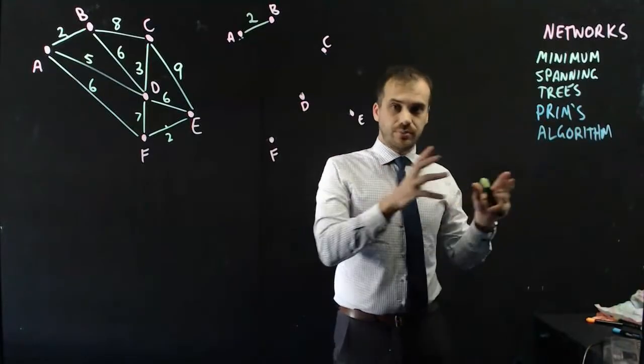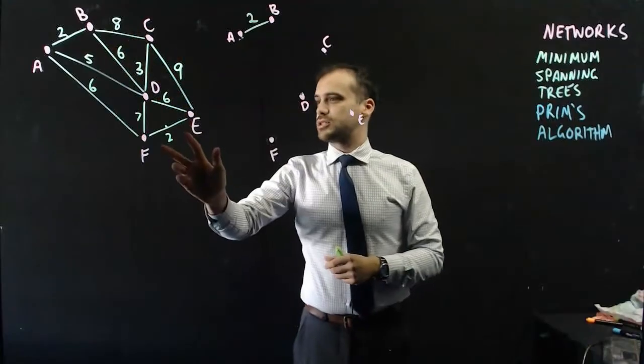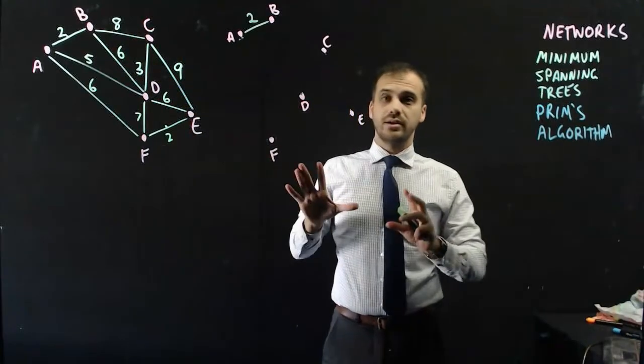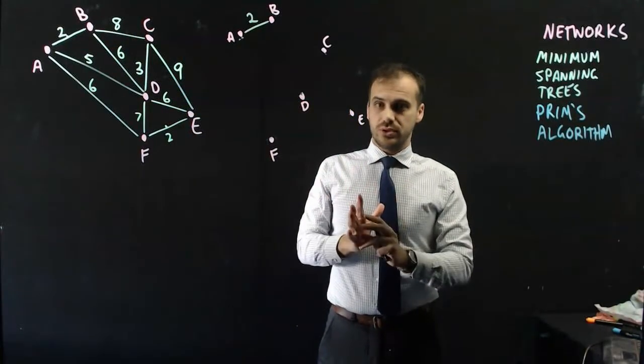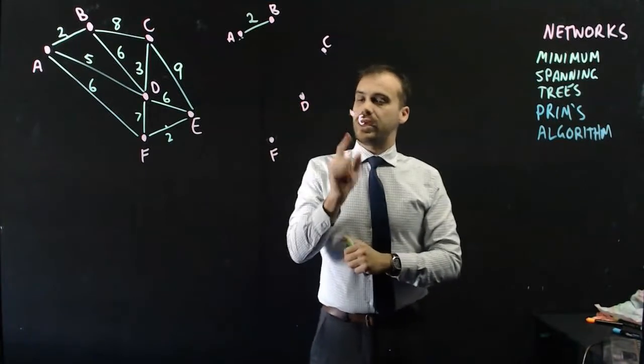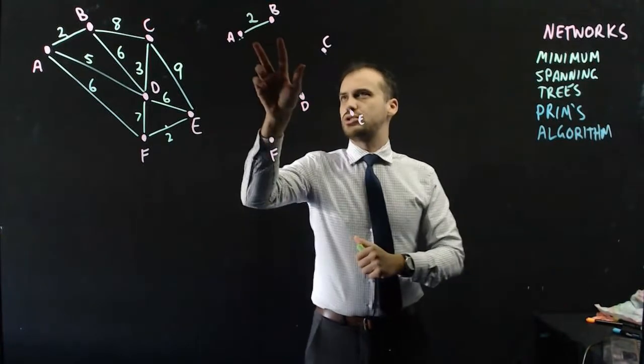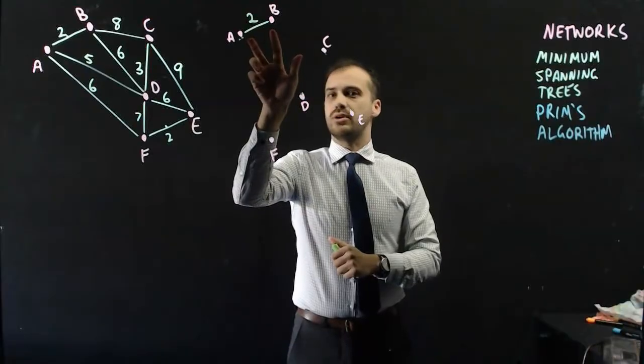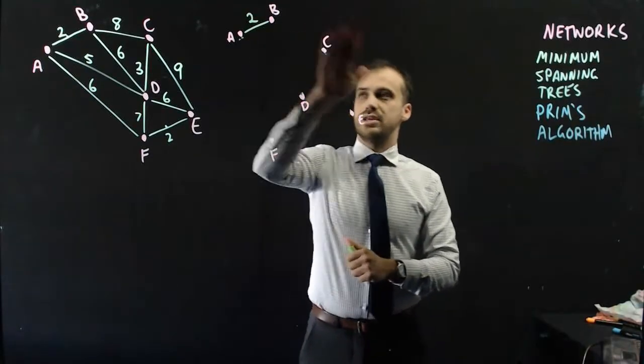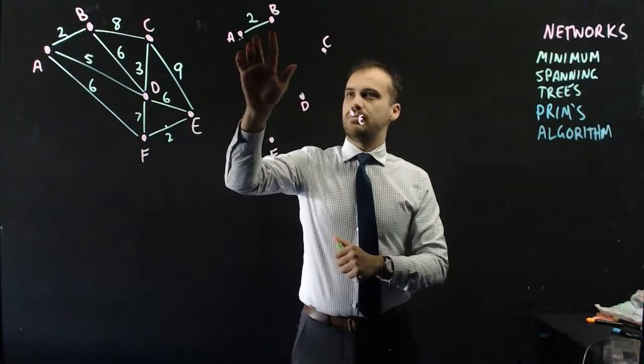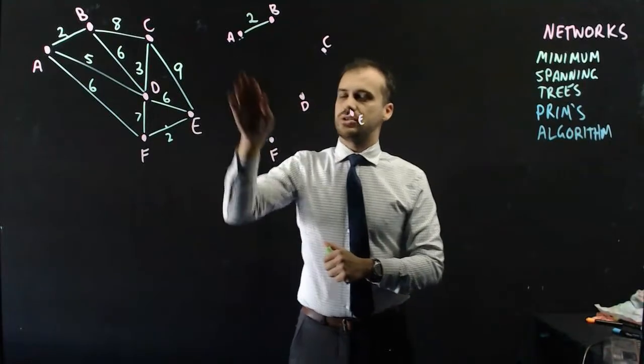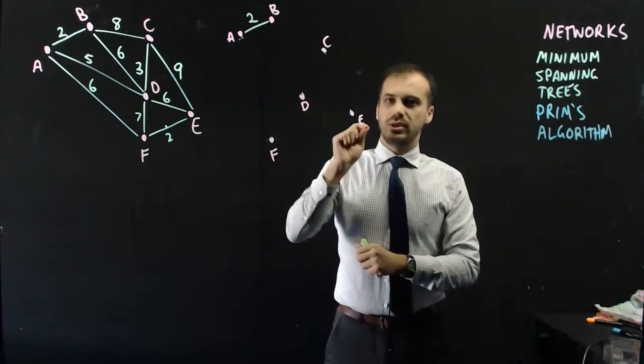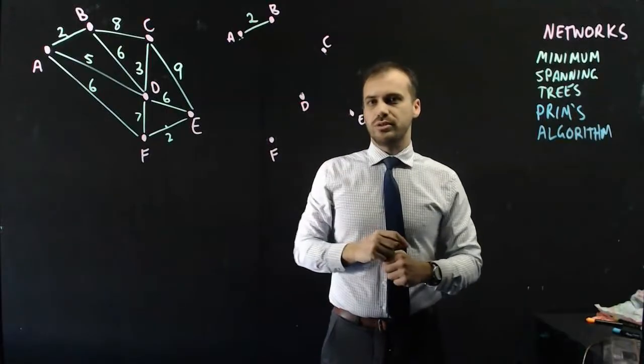In Kruskal's algorithm, you would look for the next smallest edge, and it wouldn't matter where that edge was. Instead, our goal here is to join A and B to something on this network, to join A to B to C or to D or to E or to F, and do it with the shortest road possible.